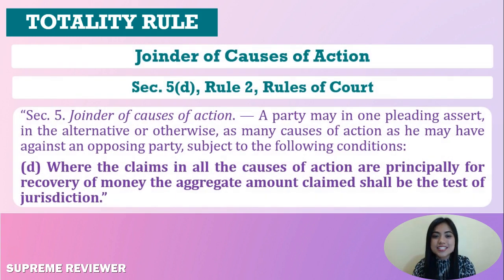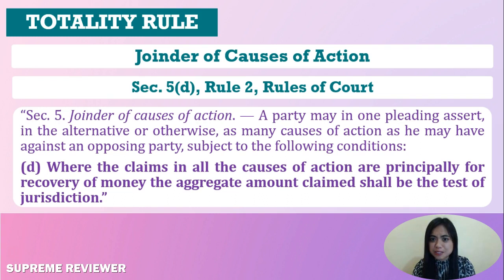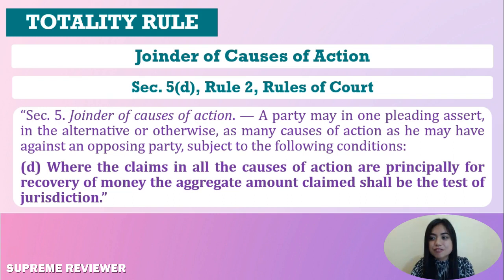Under the Rules of Court provision on joinder of actions, a party may in one pleading assert, in the alternative or otherwise, as many causes of action as he may have against an opposing party, provided that where the claims in all the causes of action are principally for recovery of money, the aggregate amount claimed shall be the test of jurisdiction. This presupposes that the different causes of action which are joined accrue in favor of the same plaintiff or plaintiffs and against the same defendant or defendants, and that no misjoinder of parties is involved.